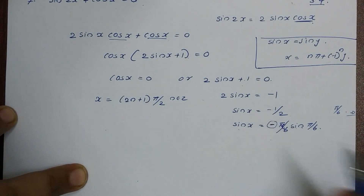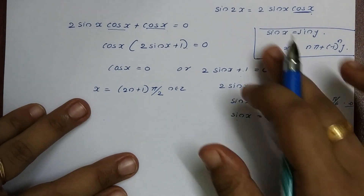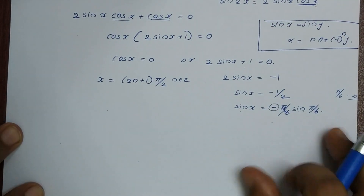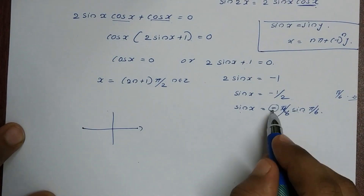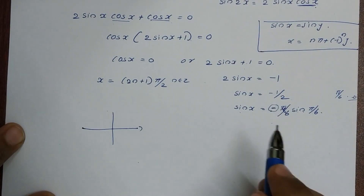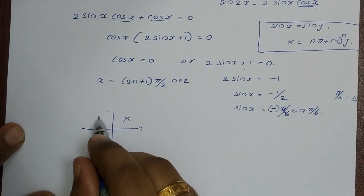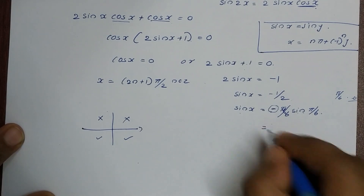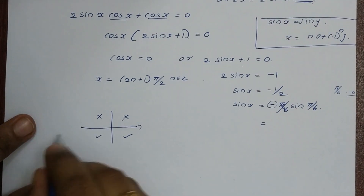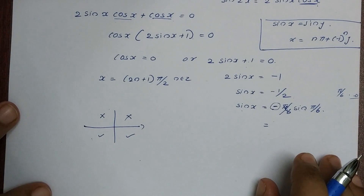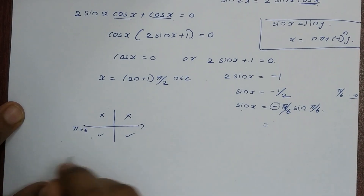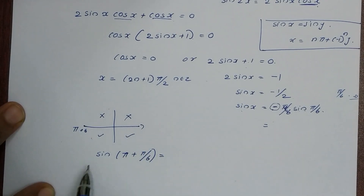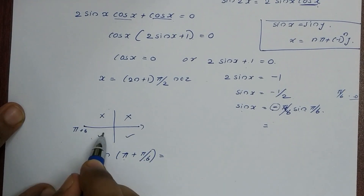Sin is negative in the third and fourth quadrants. We take the third quadrant where the angle is π plus θ. So sinx equals sin(π plus π/6), which equals minus sin(π/6). In the third quadrant, sin is negative.